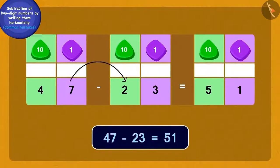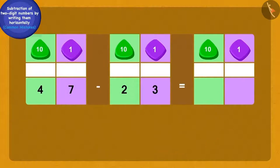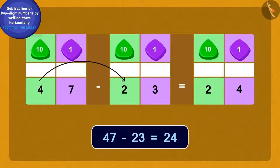Now, Bola erased this wrong answer and subtracted the three ones of 23 from the seven ones of 47. Then, after subtracting two tens from four tens, he wrote the answer as 24.